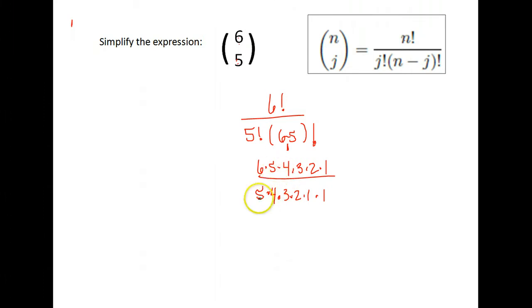Let's simplify. So notice I have five, four, three, two, one multiplied in the top, and five, four, three, two, one multiplied in the bottom. On top I'm left with six, on bottom with one. And six divided by one just leaves me with six.